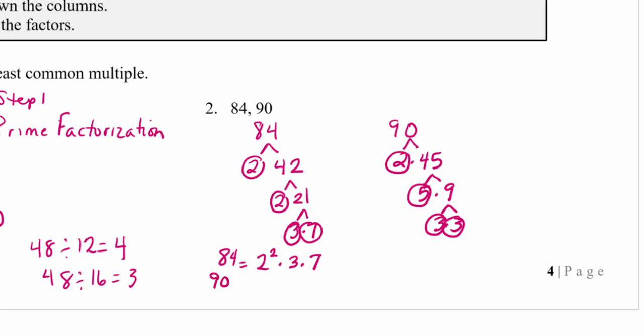So 90 has one 2, two 3s, and a 5. Notice that 84 does not have a 5, so I put a bubble — an empty spot — in that column for 84. And 90 does not have a 7, so I put another bubble there. I line up the 2s in a column, the 3s in a column, the 5s in a column, and the 7s in a column, using bubbles wherever a number is missing a factor.